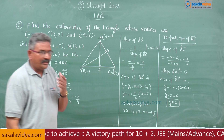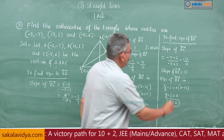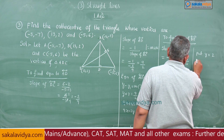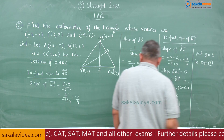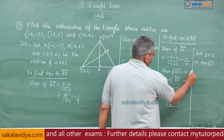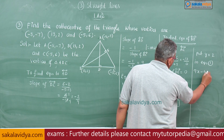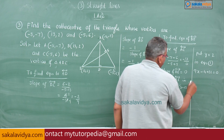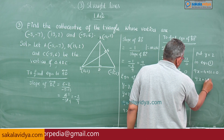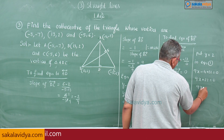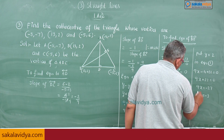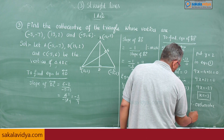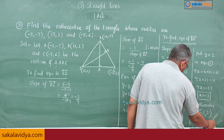Substituting y equals 2 into equation 1: 9x minus 4 plus 31 equals 0, so 9x plus 27 equals 0, giving 9x equals minus 27, therefore x equals minus 3. Therefore, the orthocenter is minus 3 comma 2.